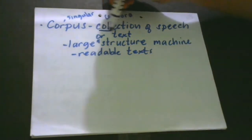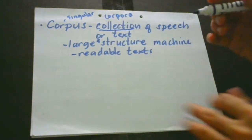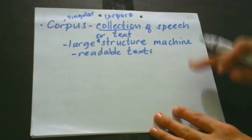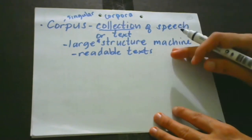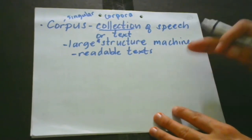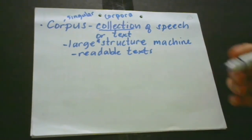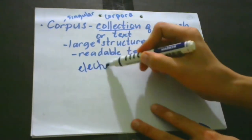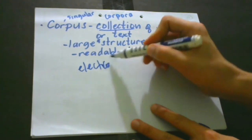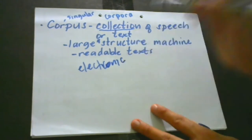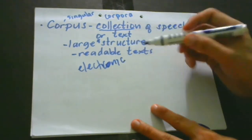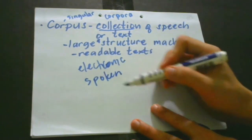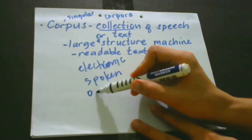Don't forget that it is a collection. Since we are dealing with natural language processing, we are going to define it formally: it is formally defined as a large and structured, machine-readable text that has been produced in a natural communicative setting. They can be derived in different ways — like text that was originally electronic, transcripts of spoken languages, optical character recognition, and many more.